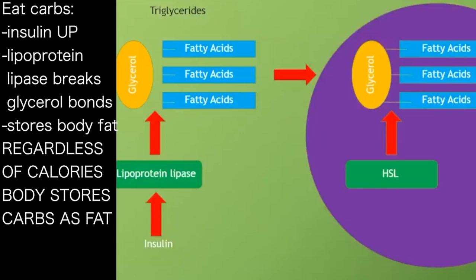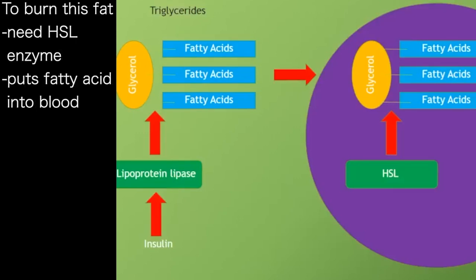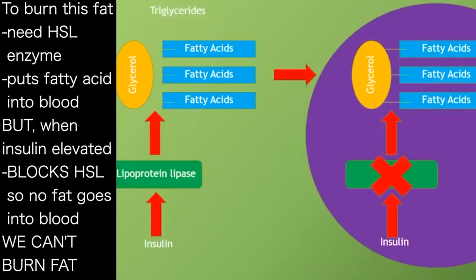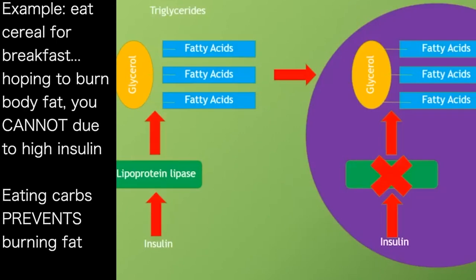When we consume carbohydrate, the pancreas releases insulin, which upregulates an enzyme called lipoprotein lipase. This breaks the bonds on the glycerol backbone and signals the body to store fat — and this occurs regardless of caloric value. To burn that fat for fuel, we need to reverse this process using another enzyme called hormone sensitive lipase, which breaks the bonds on the glycerol backbone and puts fatty acids into the bloodstream. However, when insulin is elevated, insulin blocks hormone sensitive lipase, preventing our body's ability to burn body fat.